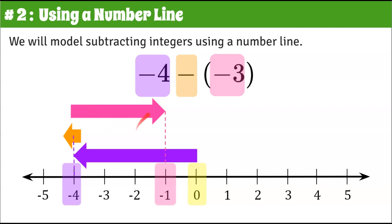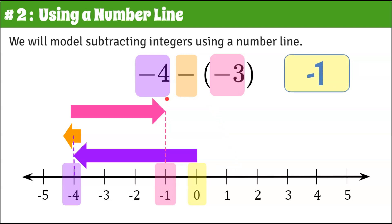So now we go to the right because we have to change our direction — we go three: one, two, three. And we land at negative one, which is exactly where we landed when we used keep, change, opposite. So negative one is the answer to negative four subtract negative three.